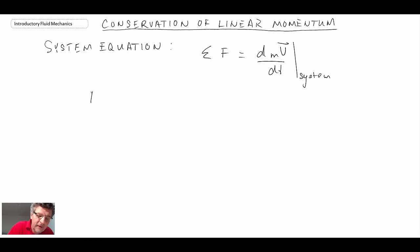Now in terms of our extensive and intensive properties, so eta is then just the vector v. So with that we can rewrite using the relationship between the system and the control volume for the time derivative.